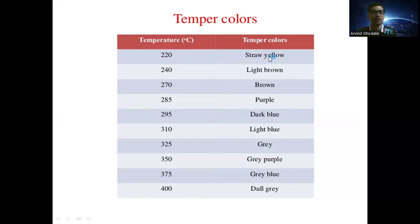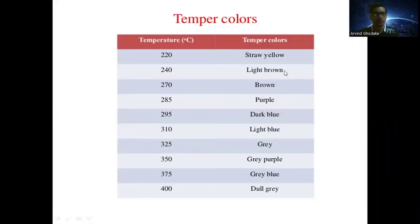The various tempering colors and their corresponding temperatures are shown in a table. At 240°C the color is light straw; at 270°C it is light brown; at 285°C it is brown; at 295°C it is purple; at 310°C it is dark blue; followed by light blue, gray, gray-purple, gray-blue, and dull gray up to around 400°C.